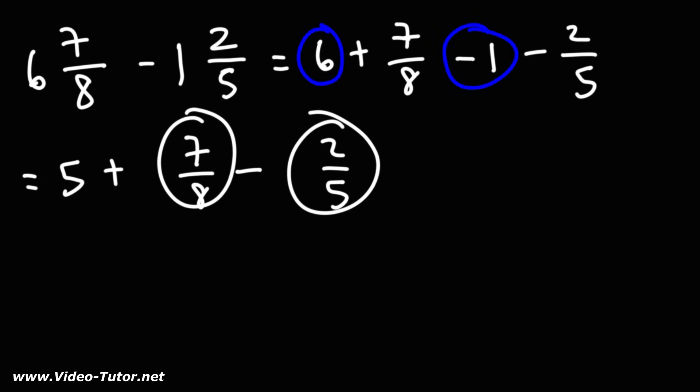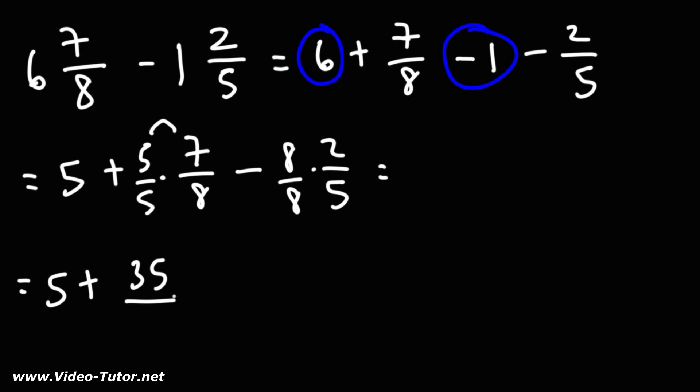So to subtract these fractions, we need to get common denominators. I'm going to multiply the first fraction using the denominator of the second, and I'm going to multiply the second fraction using the denominator of the first. 5 times 7 is 35. 5 times 8 is 40. 8 times 2 is 16. 8 times 5 is 40.